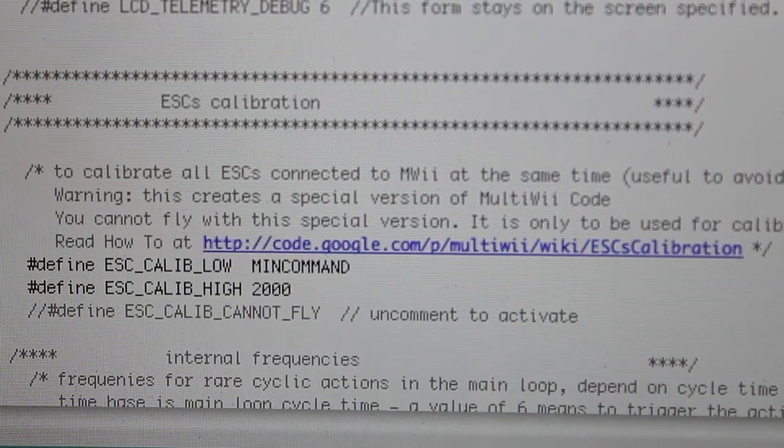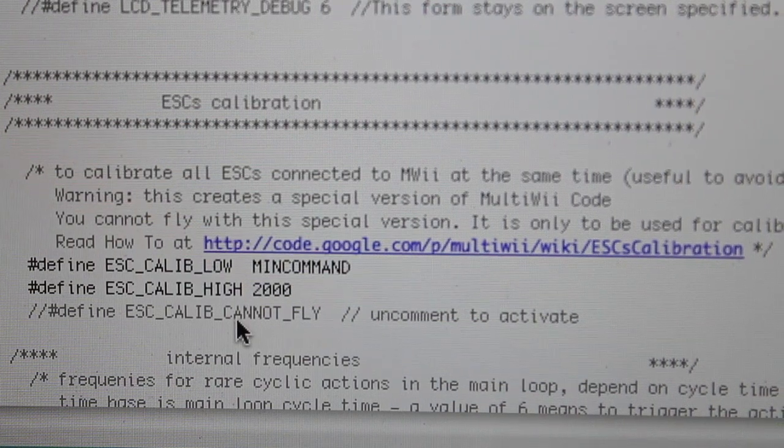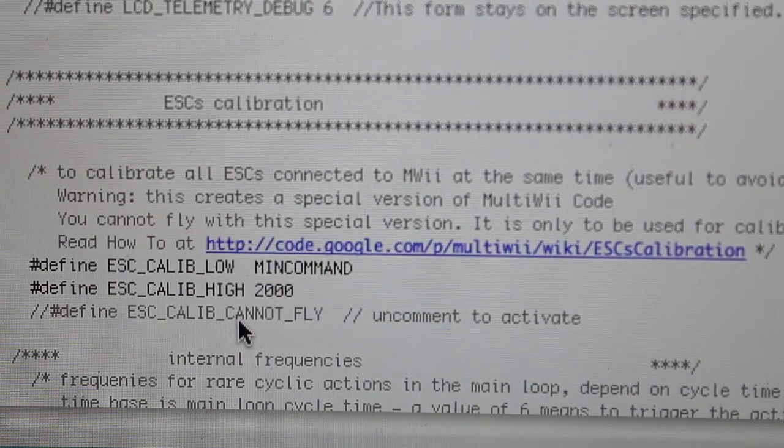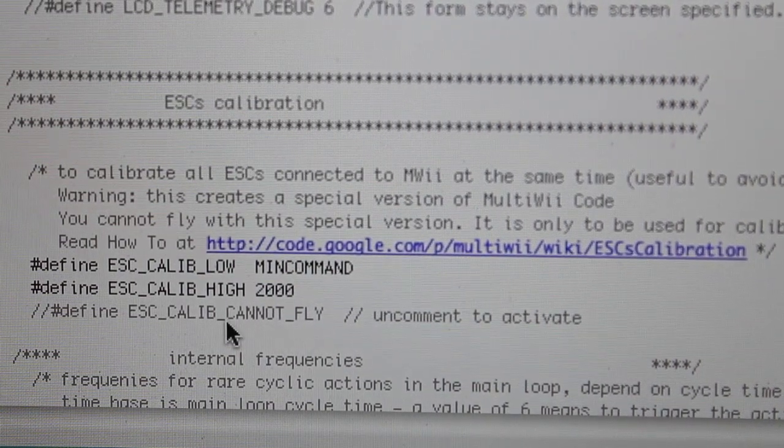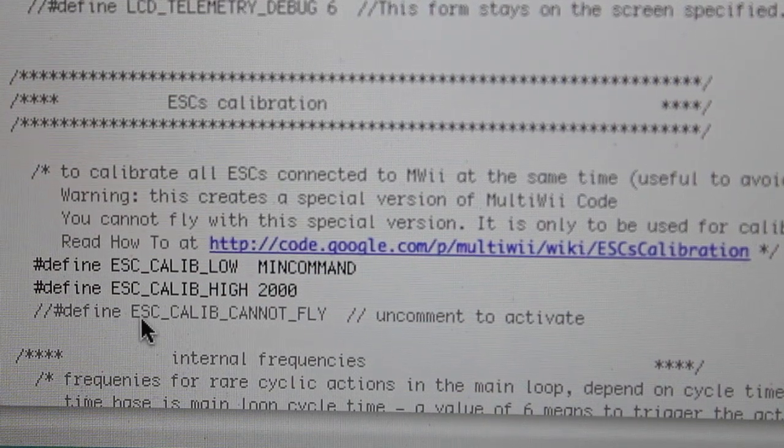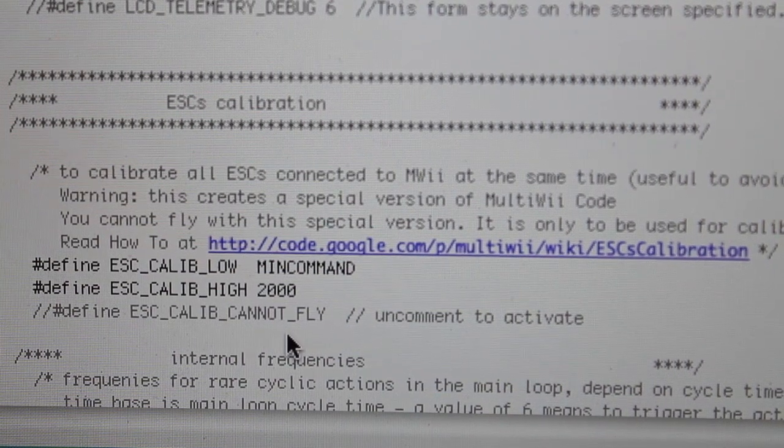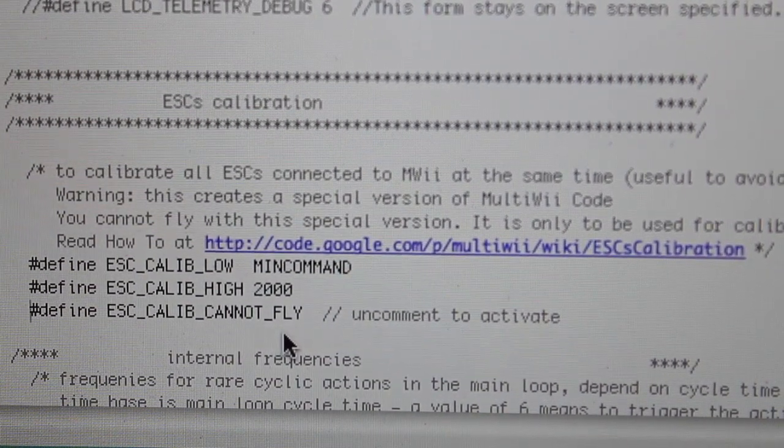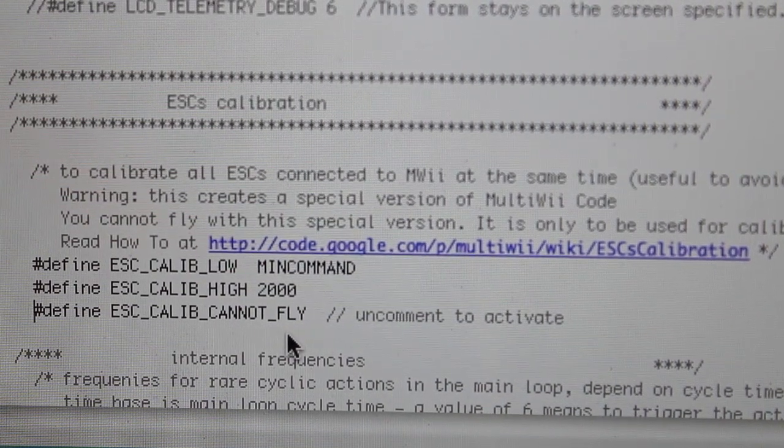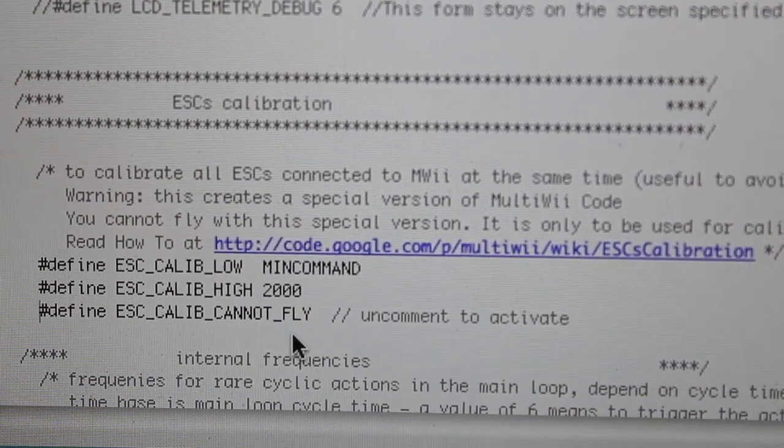Okay, so we're looking at the MultiWii firmware and I want to point out that this is actually version 2.1 of the firmware. I could not locate this command in version 2.0, but what needs to happen is there's this ESC calibrate cannot fly, and you want to uncomment that. It's actually in the config.h file. Next we'll go ahead and save, compile, and upload to our MultiWii board.